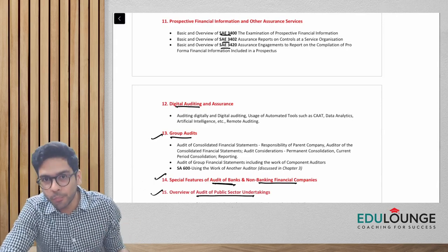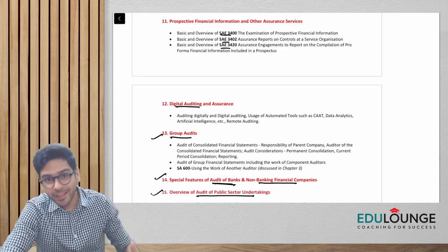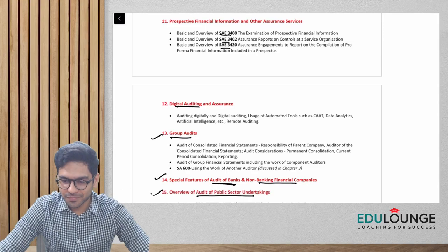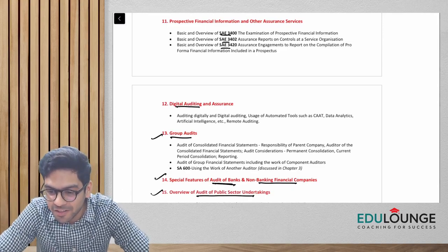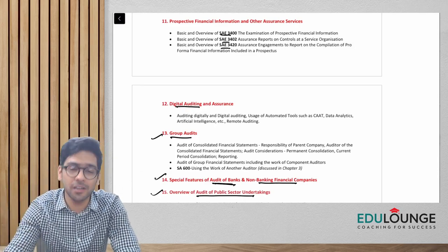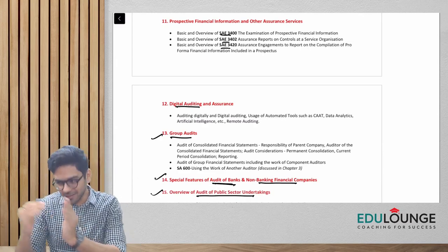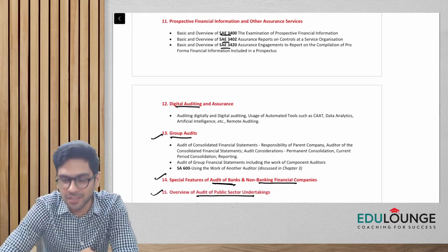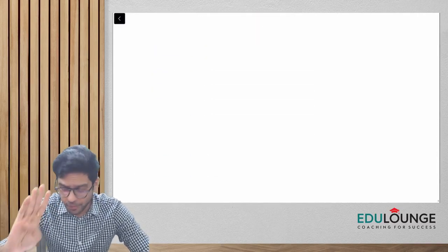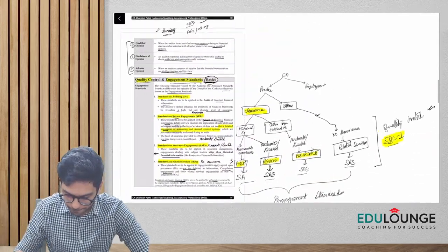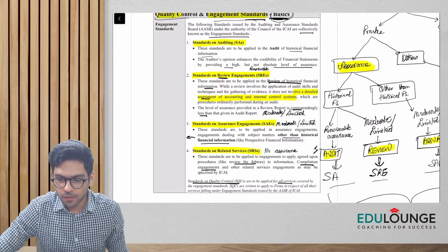Regarding whether review is a statutory requirement: yes, in listed companies there are requirements for quarterly review of financial statements, and the review report is uploaded with SEBI. Engagement standards do not cover internal audit — internal audit is totally different; we have SIAS — Standards on Internal Audit — which we'll discuss separately. Standards on internal audit are not yet mandatory. The basics of the four different categories of engagement standards should now be clear.